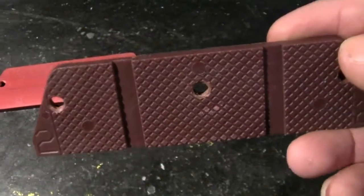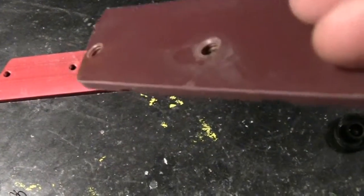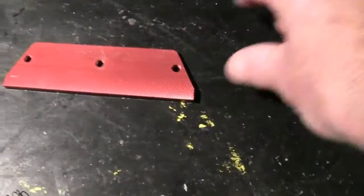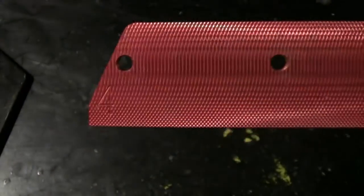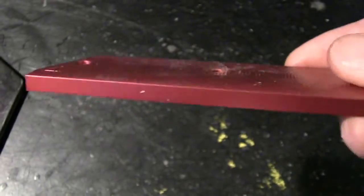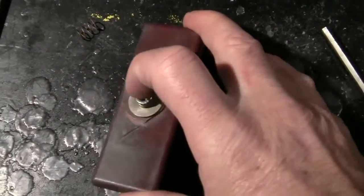You don't want to over-crank it because you will strip the threads in the plastic plate if you try to over-crank it. Now in your higher degree angles, you've got aluminum and you can tighten that pretty tight.